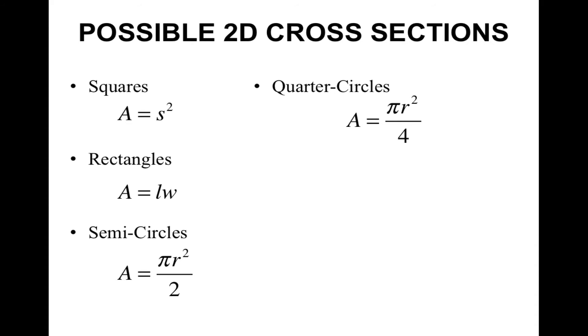Possible 2D cross-sections that you're going to need to know the area formulas for. Squares, which we know is just side squared. Rectangles, length times width. Semi-circles, pi r squared divided by 2. Quarter circles, pi r squared divided by 4. Right isosceles triangles, area equals base squared over 2. And equilateral triangles, which is the square root of 3, base squared all over 4. These formulas should all come from your geometry class. You do need to know these. These won't be given to you on the AP test.